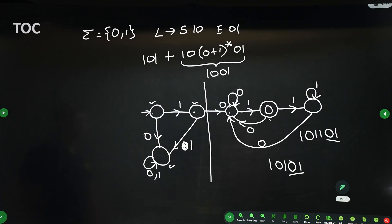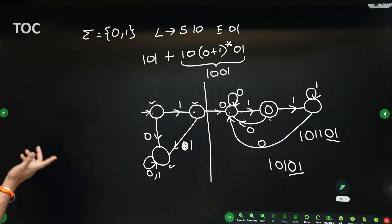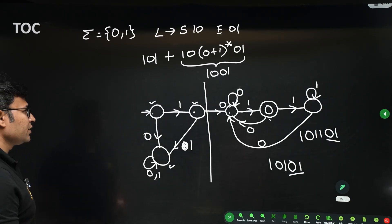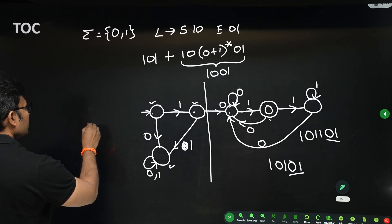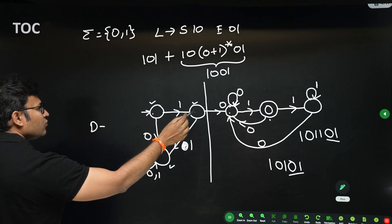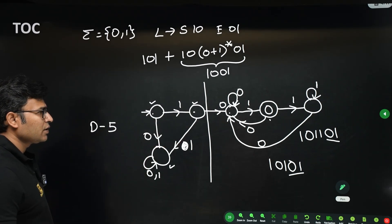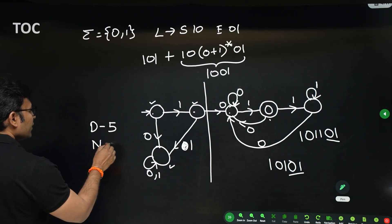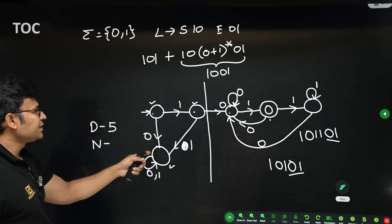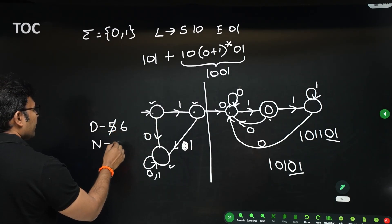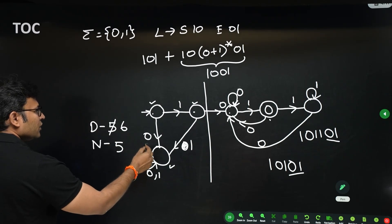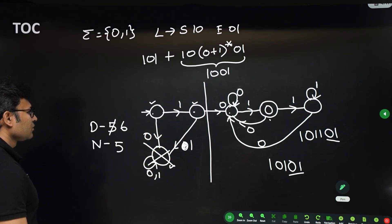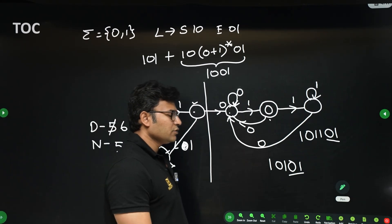In this question the minimal DFA has five states. There is no formula for these kinds of questions. The NFA has six states — wait, here the DFA is six and the NFA is five, because we remove one state to get five states.